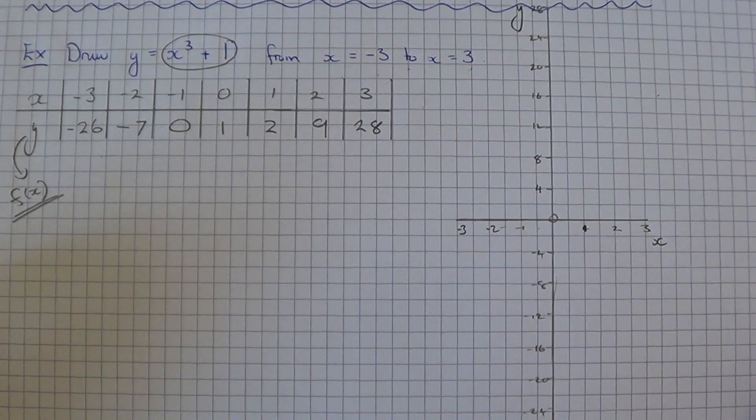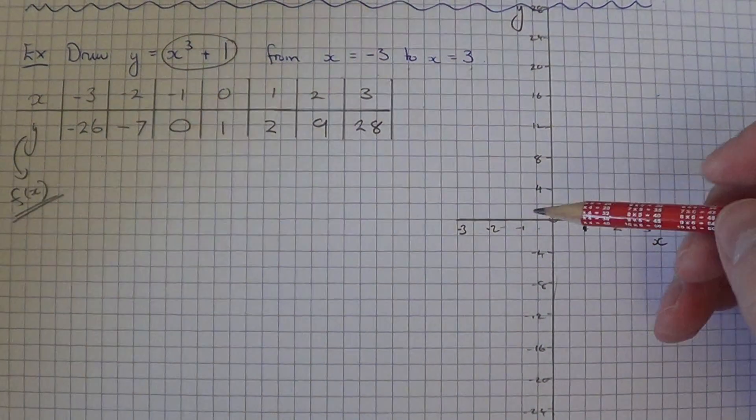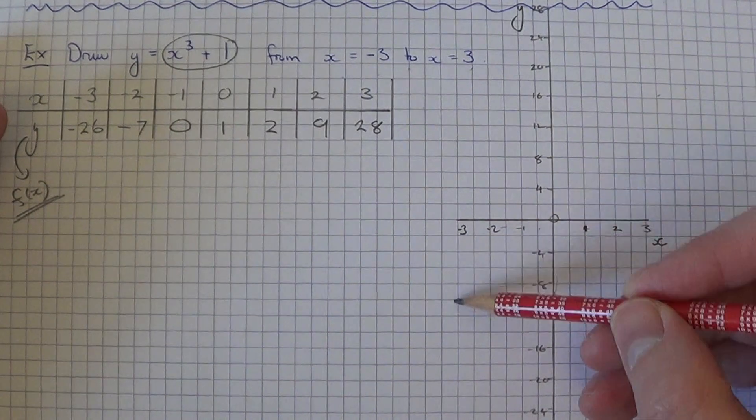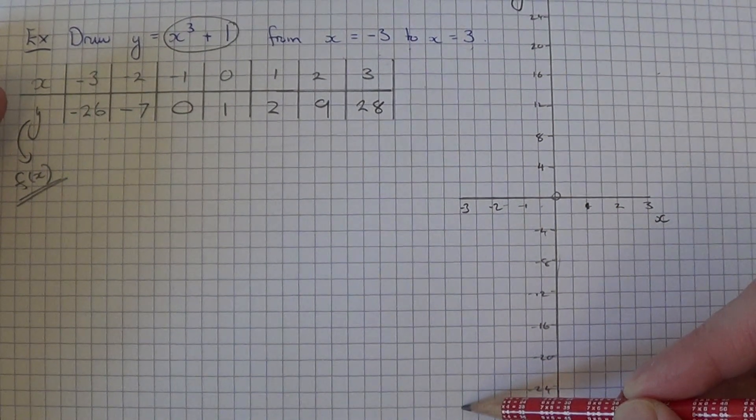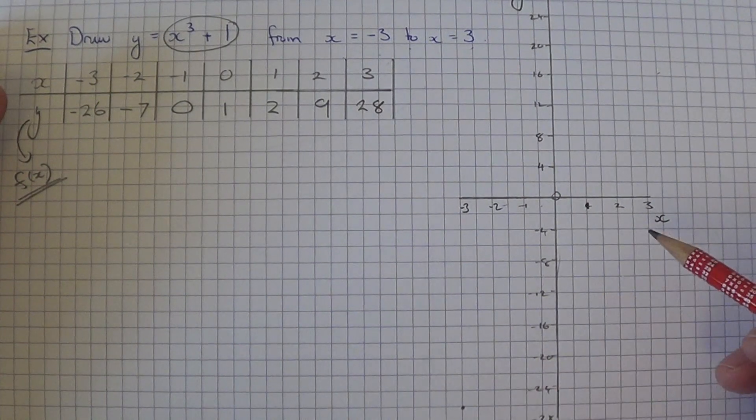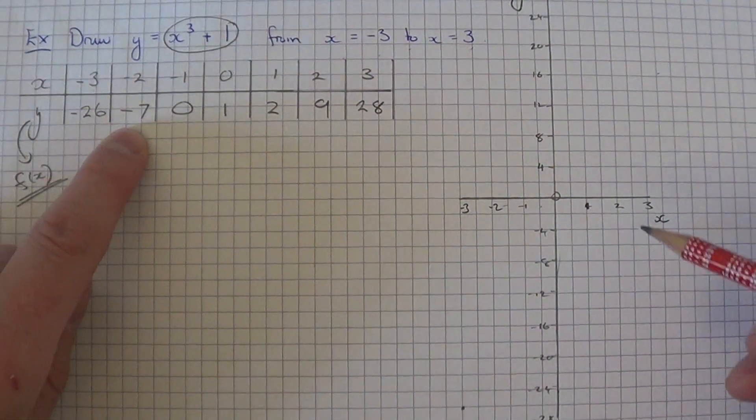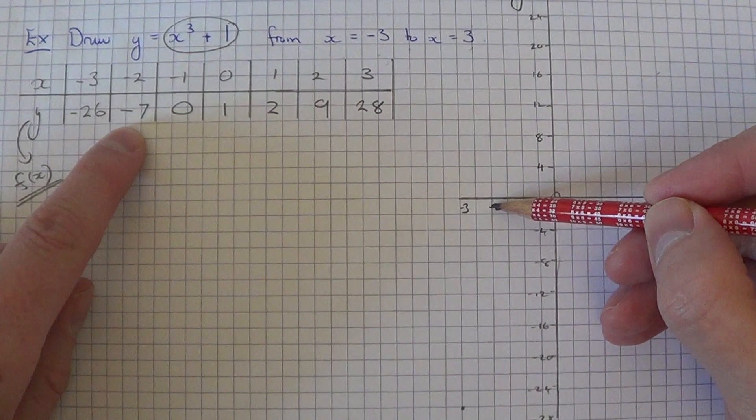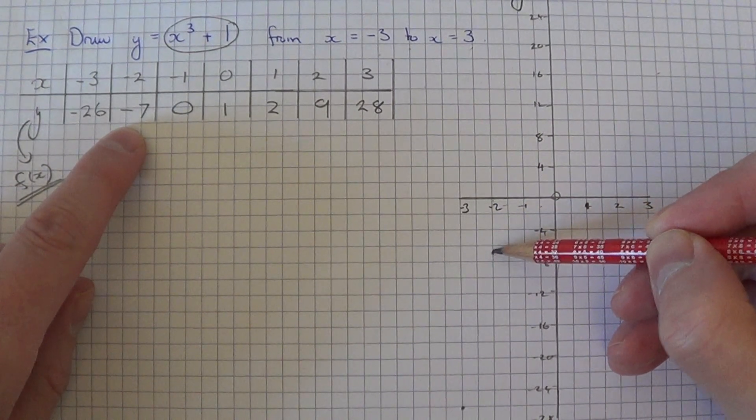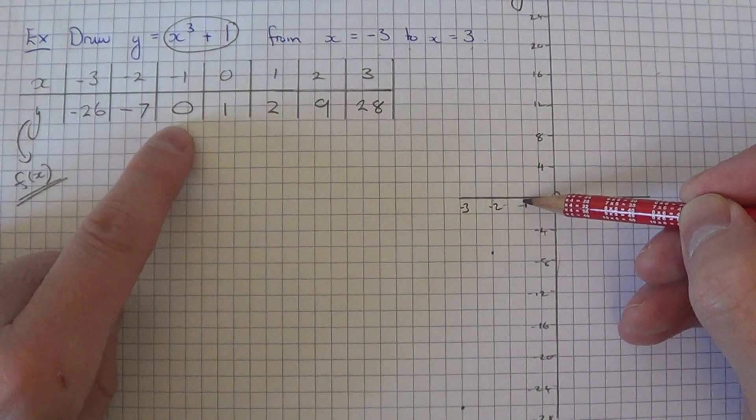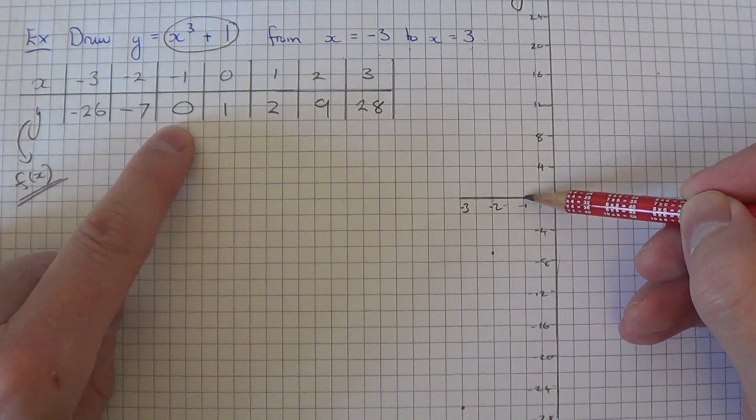The first point we had was minus 3, which is minus 26. The next point was at minus 2, which gives us a y-coordinate of minus 7. The next point was at minus 1, which was 0.